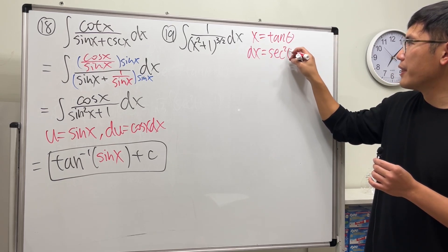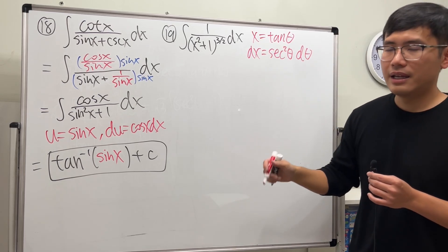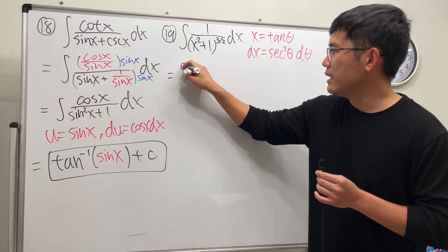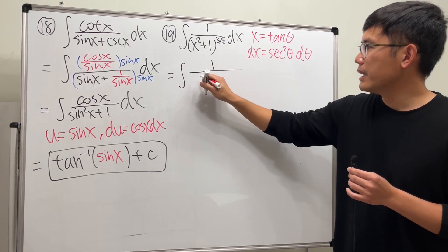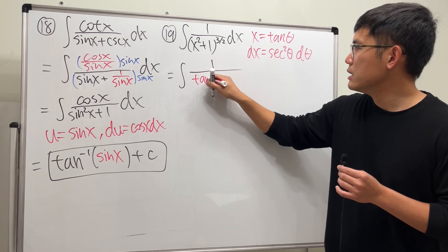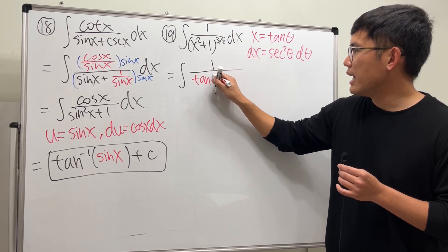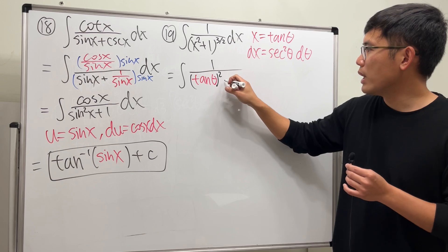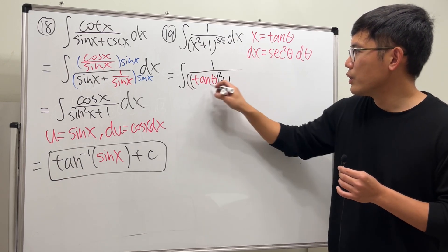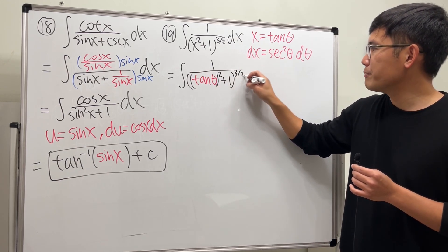So we are going to get the integral of 1 over tangent squared theta plus 1, and then we take this to the 3 halves power. dx is secant squared theta d theta.